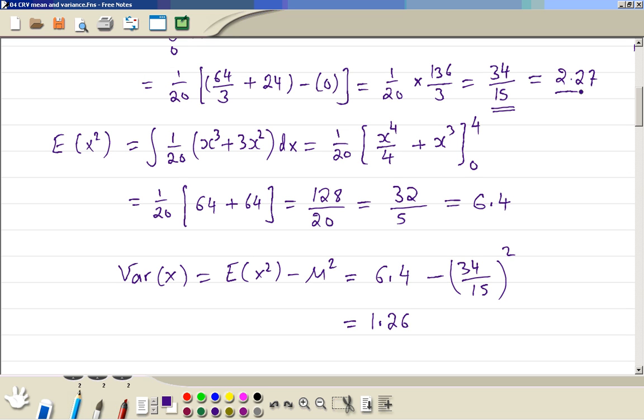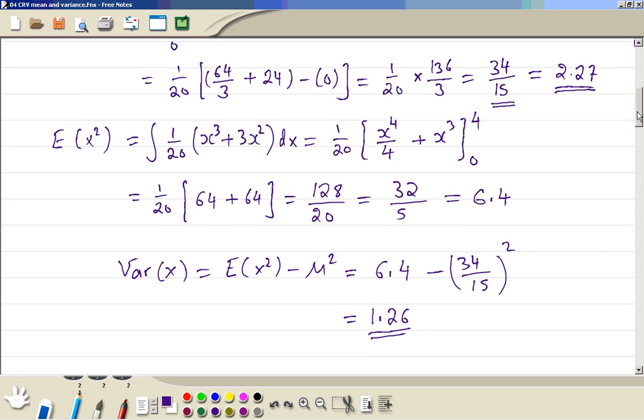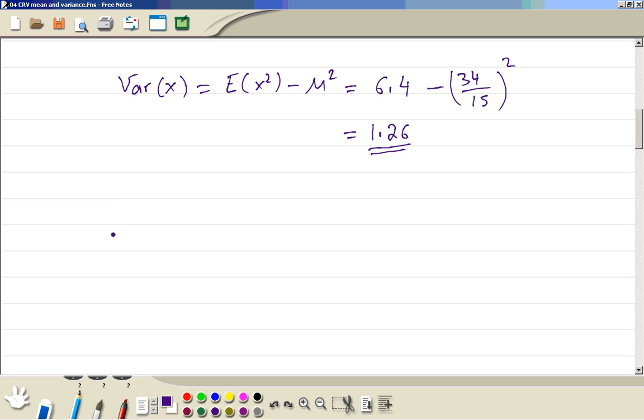So this is our mean and this is our variance. So now we write the answers. The mean is equal to 2.27 and variance is equal to 1.26.